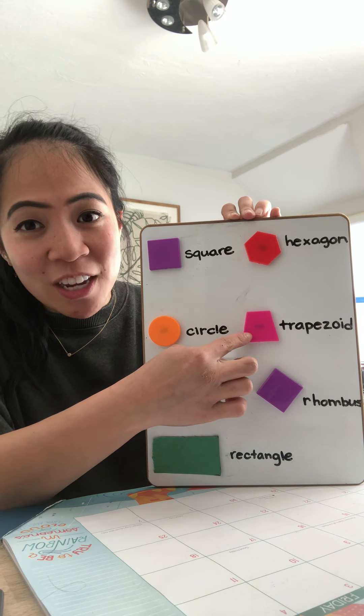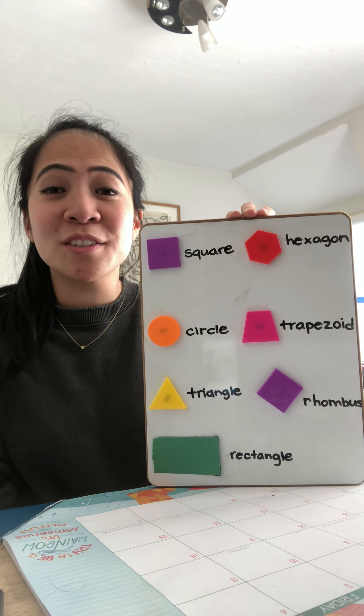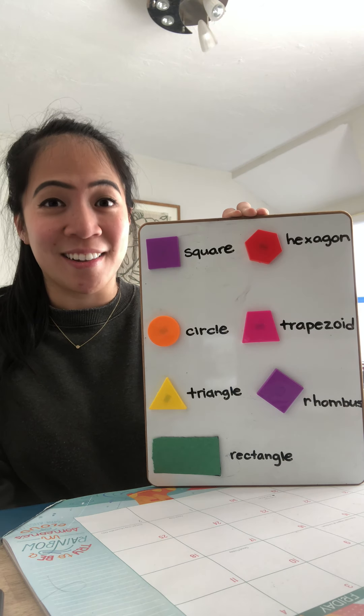Now, does anybody know what this shape is? It's called a trapezoid. Can you say trapezoid?